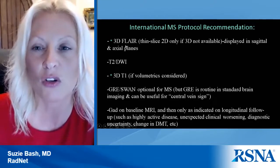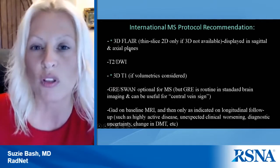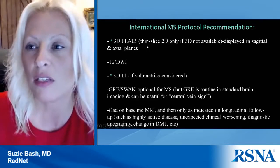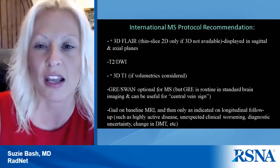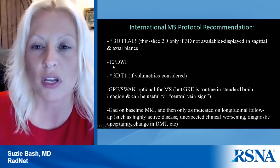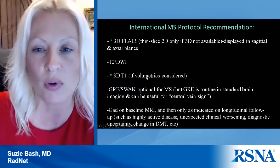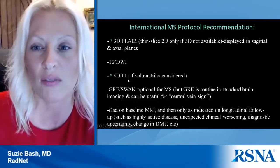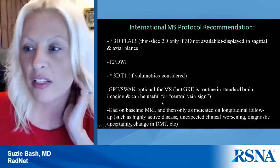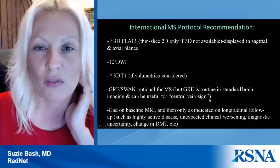The consensus guidelines recommend only 2D thin-slice FLAIR if you don't have 3D capability, with images displayed in both sagittal and axial planes. The advantage of 3D FLAIR is not only higher sensitivity but also time savings: with 2D you need two acquisitions in sagittal and axial planes, but with 3D you can acquire in sagittal and reformat in axial. The protocol also includes T2 and DWI which are routine sequences anyway, and if considering quantitative volumetric MRI — which I would strongly always consider — acquire a 3D T1, which can be done on any 1.5T or 3T magnet.